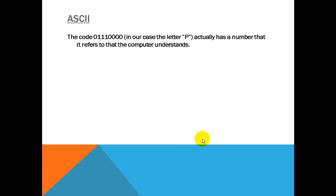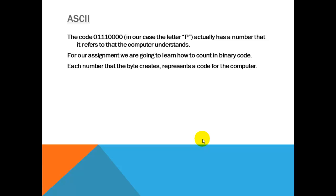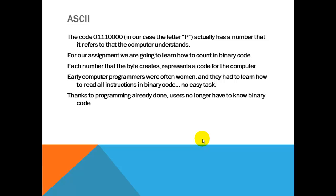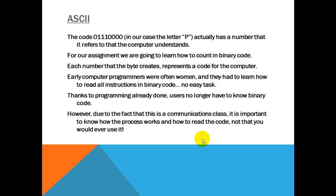Now, if we look at the letter P, it actually has numbers, and it refers to that the computer understands. We've already talked about that. For our assignment, we're going to learn how to count in binary code. So we're not going to convert over to the ASCII chart looking for letters and characters. We're just going to learn how the computer would count. Each number that the byte creates represents a code for the computer. Now, early computer programs were often women, and they had to learn how to read all of the instructions in binary code. So imagine if you got a sheet of paper, and this entire sheet of paper is covered with nothing but zeros and ones, and you have to go through and translate that. That would not be an easy task.